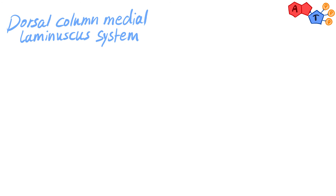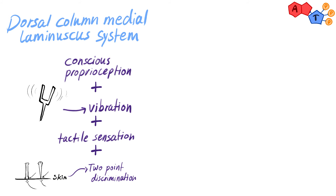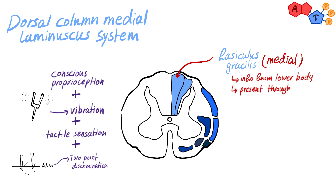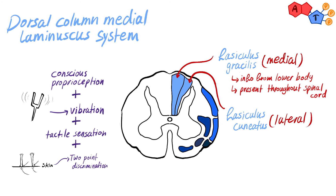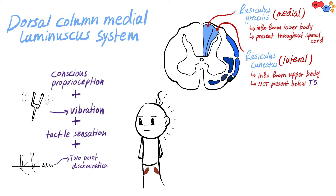Now let's move to the dorsal column lemniscus system. This system carries conscious proprioception, vibration, tactile sensation, and two-point discrimination. It is composed of two tracts: one located medially — fasciculus gracilis — which carries information from the lower part of the body and is present throughout the spinal cord; and one located laterally — fasciculus cuneatus — which carries information from the upper part of the body and is not found below T5. You can remember fasciculus gracilis by relating it to the gracilis muscle on the medial thigh, as it carries information from the lower limbs.